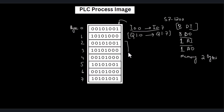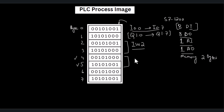Since we have one analog input channel, these two bytes addressed as IW2 are allocated for the data coming from the analog input channel. For the one analog output channel, bytes four and five are allocated — addressed as QW4, because the byte starts from four and ends at five. We address the analog input as IW2 because it starts from byte two.